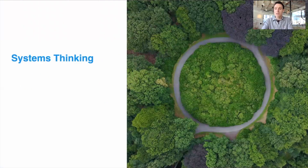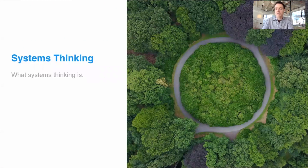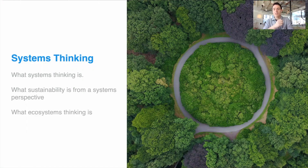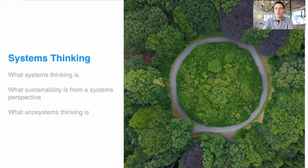The first section focuses on getting a grounding in what exactly systems thinking is — what we mean by holistic thinking, synthesis, analysis, and so forth. We'll explore what sustainability means from a systems perspective, a really key question that enables us to reframe a lot of these challenges. Finally, in the section, we'll talk about ecosystem thinking and shifting our awareness from egosystem to ecosystem thinking.